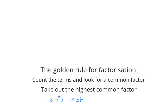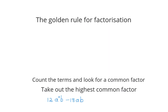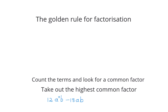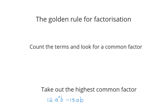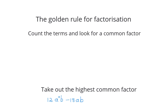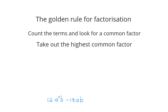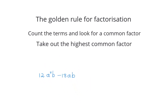The golden rule for factorization is to count the terms and always look for a common factor, no matter how many terms there are. Then you need to take out the highest common factor. I'm going to explain it by using this example.